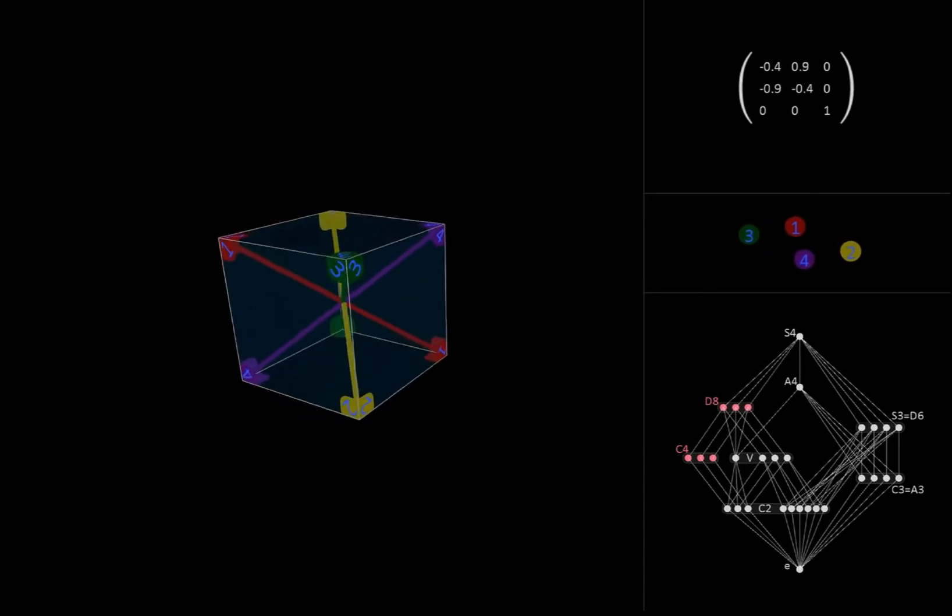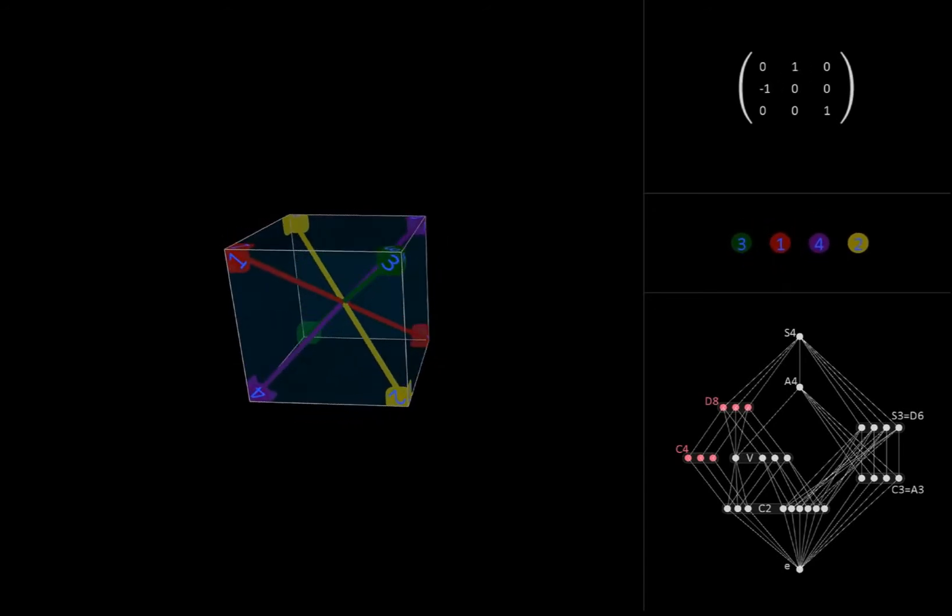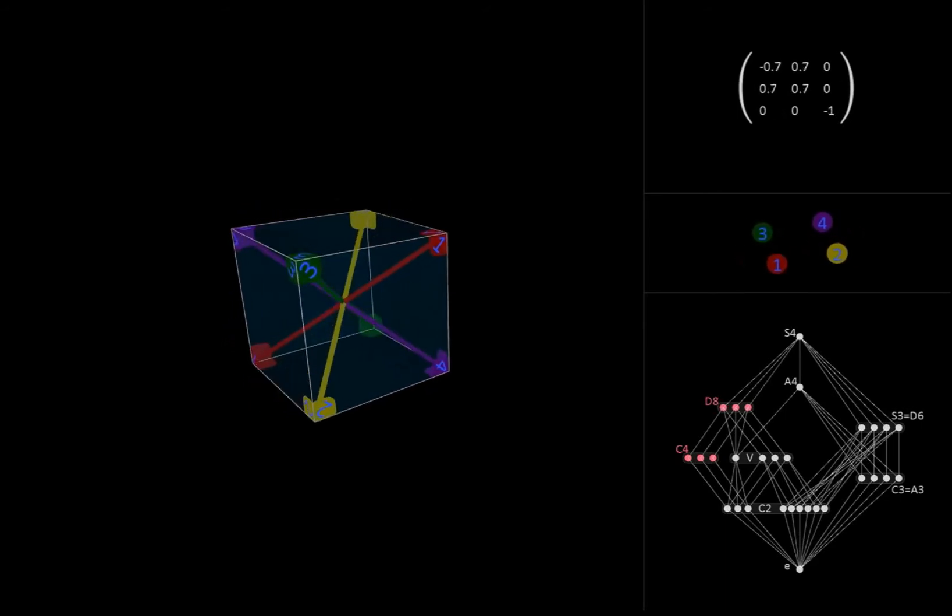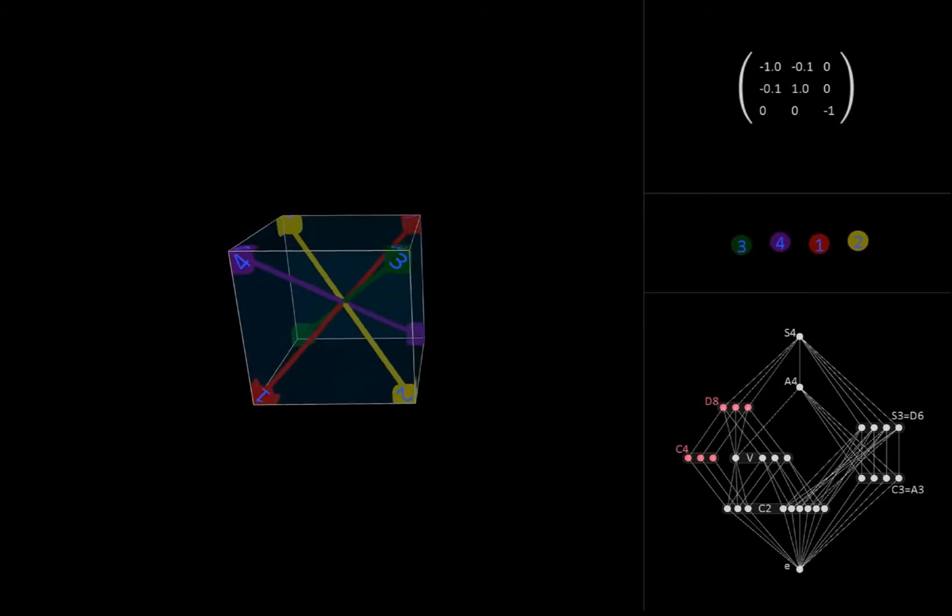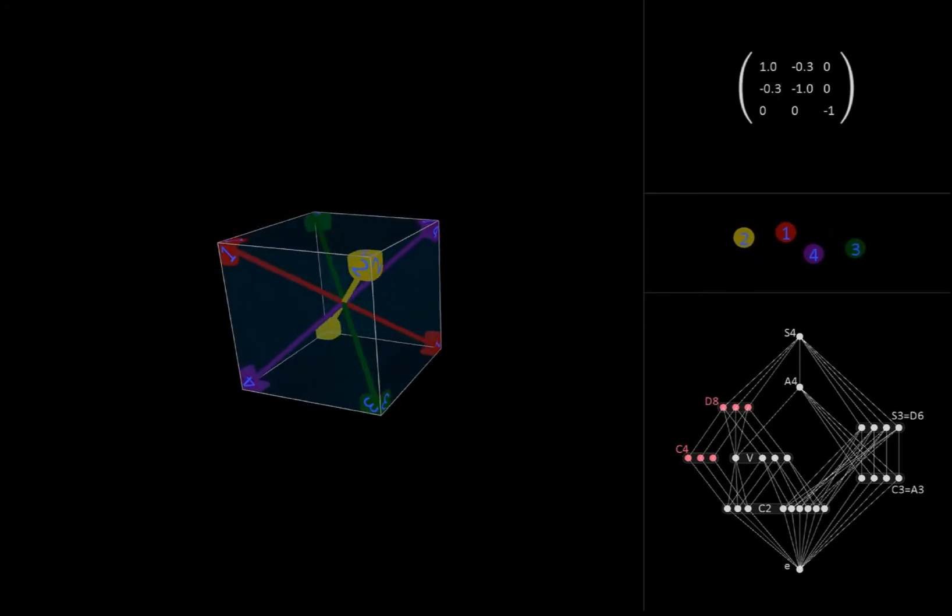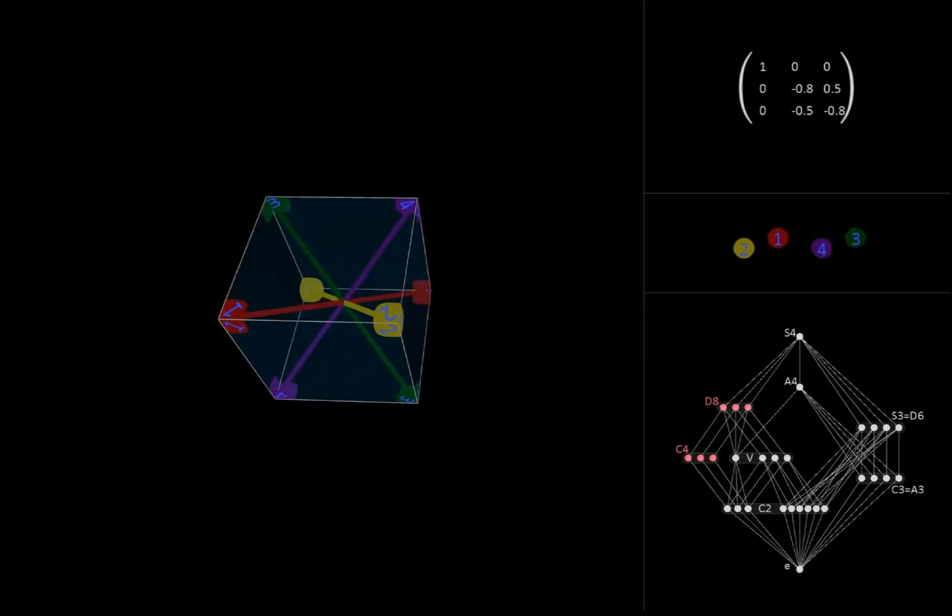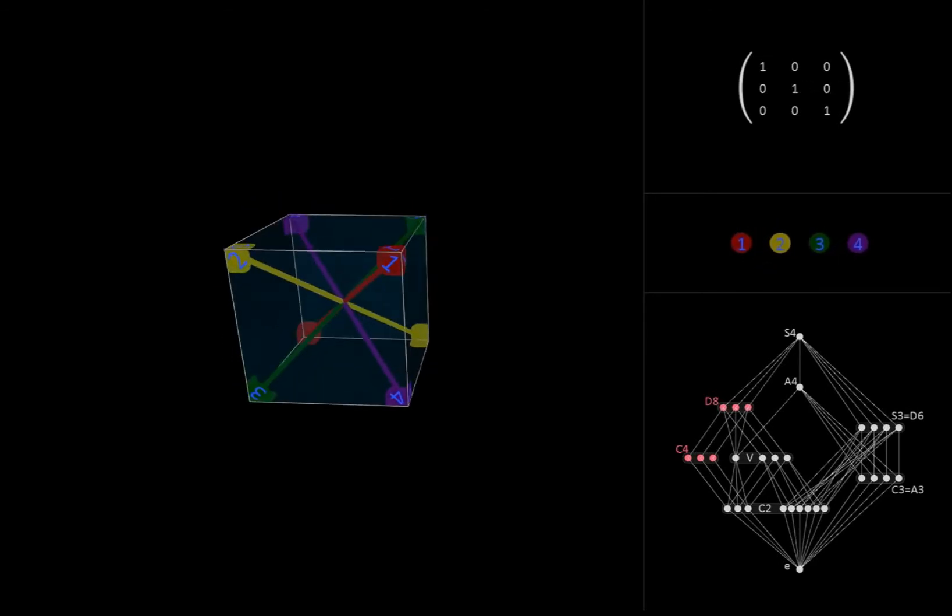In other words, these transformations either keep the z-axis fixed or flip it over so the negative part goes to the positive and vice versa. This definition will come in handy when we go to look at the Klein subgroups. As you might expect, the other two D8 subgroups are totally analogous to the one we just saw, with the role of the z-axis being played by the x or y-axis.